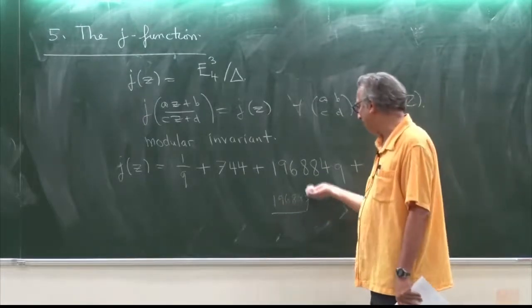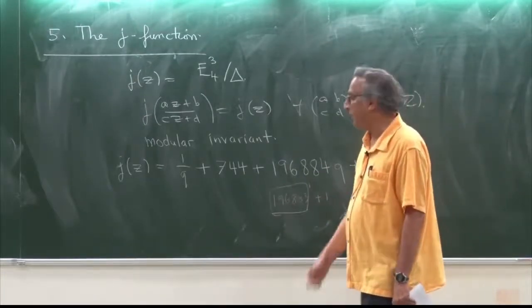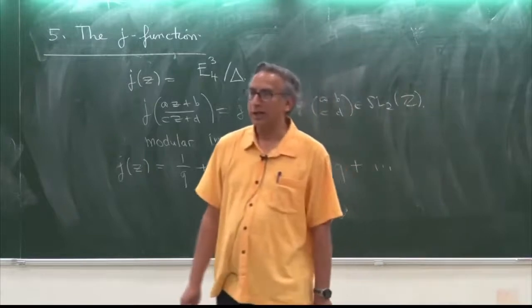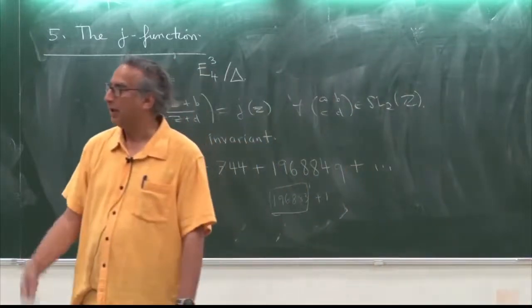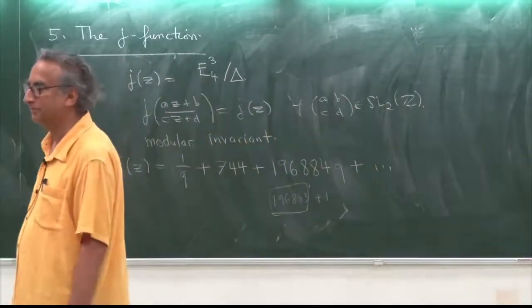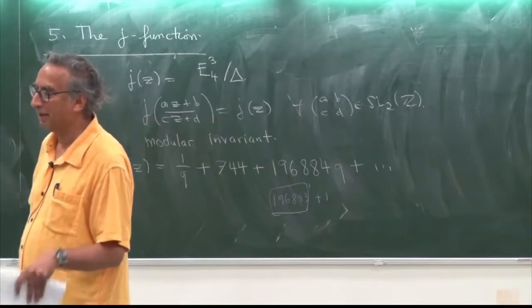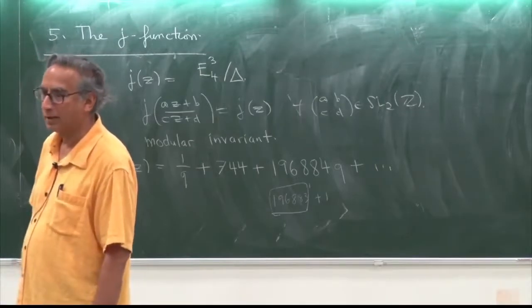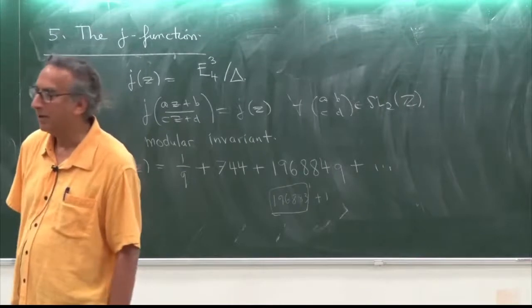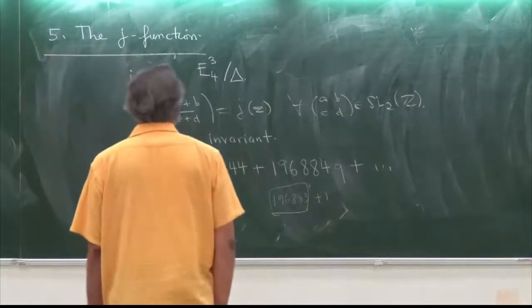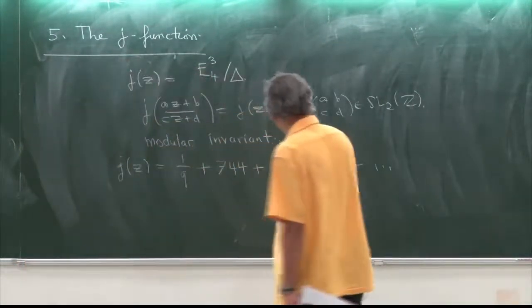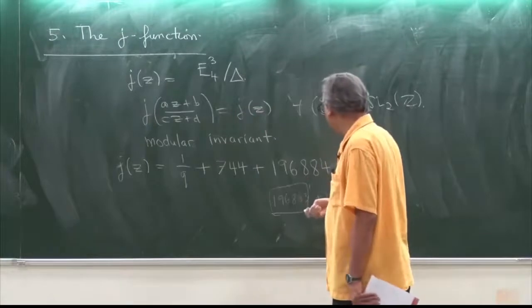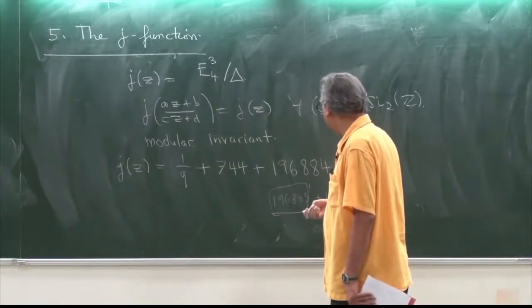The observation he made was this number is the degree of the smallest irreducible representation of the monster group. He thought there must be some theoretical reason—it's not just a fluke, it's not a coincidence that this is the case. And by golly, he was right.